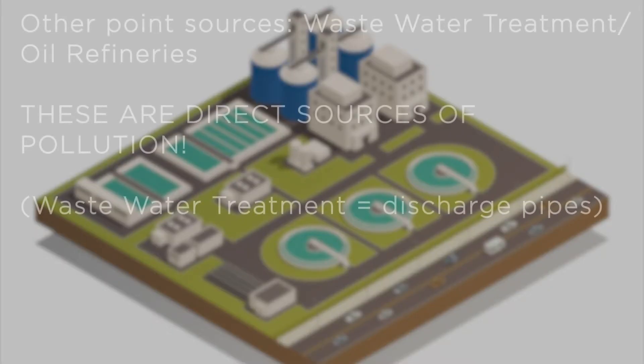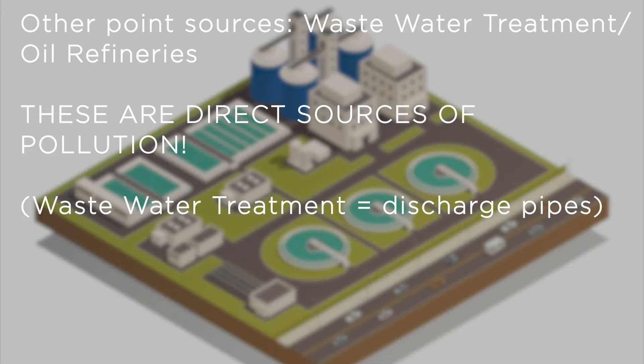Other point sources of pollution include wastewater treatment plants and oil refineries. When thinking of point sources of pollution, it is good to think about things that directly affect the surrounding environment. In this case, some wastewater treatment plants have discharged pipes that release waste straight into bodies of water.